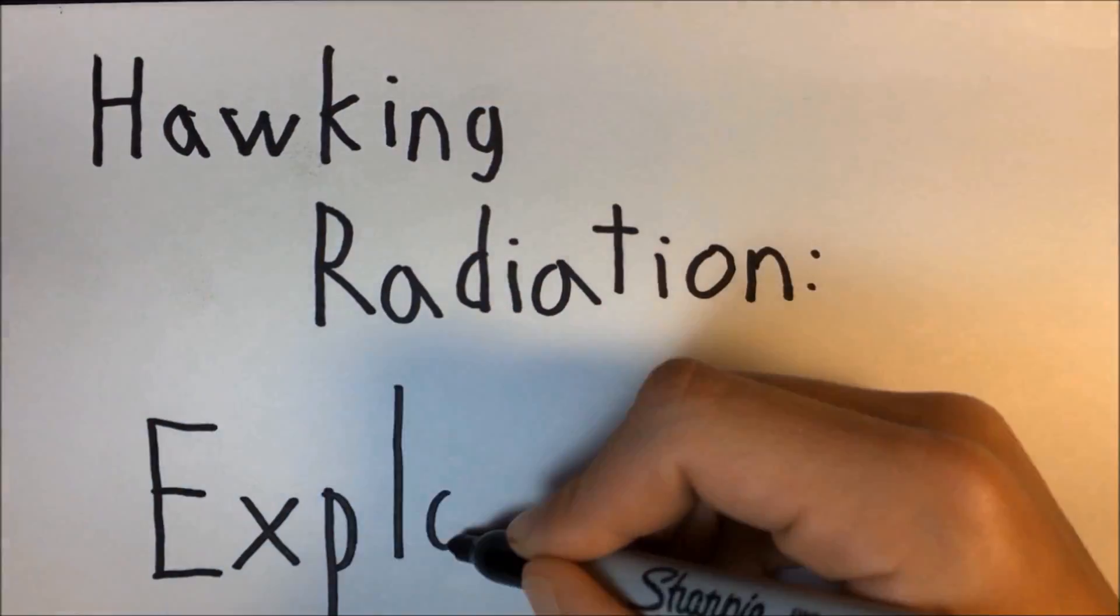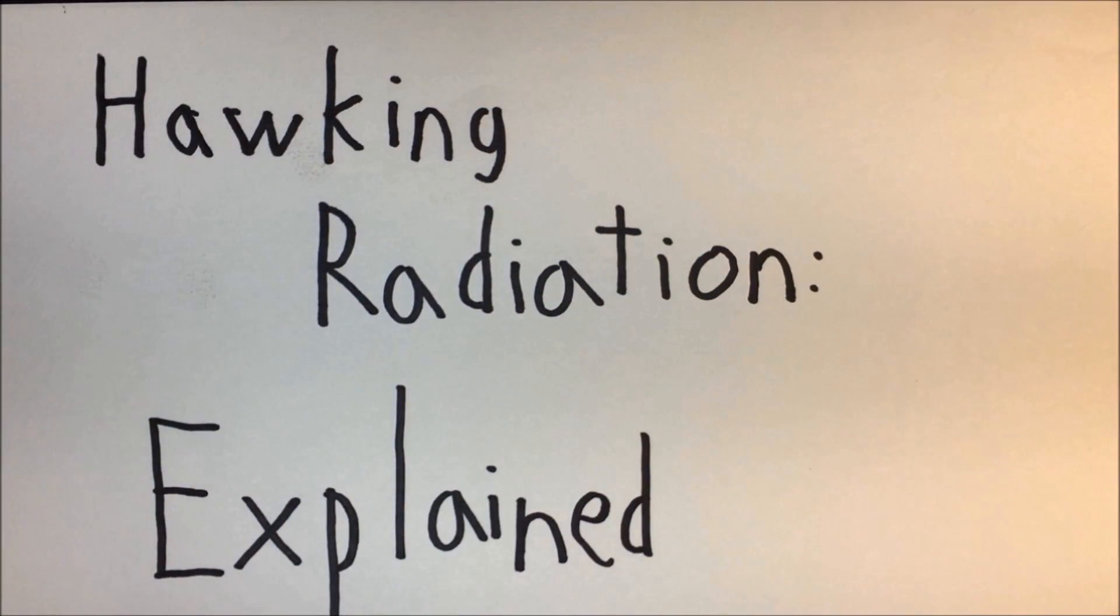Hawking radiation, explained. By now you might have heard of something called Hawking radiation, which is basically a type of radiation emitted by black holes.